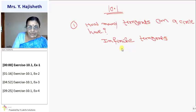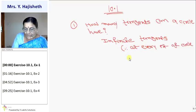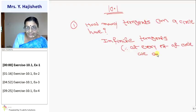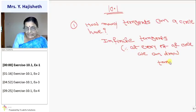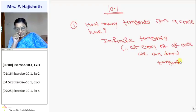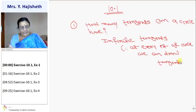Because at every point of the circle we can draw a tangent. And you know, a circle is a set of points in a plane which are equidistant from a fixed point.